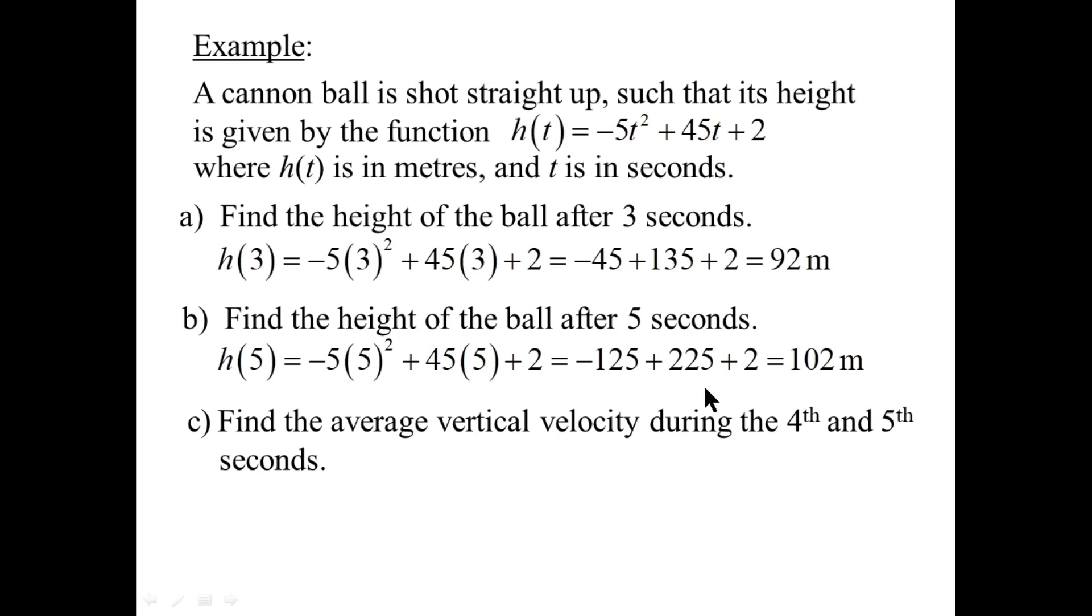Now, the average velocity during the 4th and 5th seconds will be, well, t1 will be the beginning of the 4th second. So that would be h of 3. And t2 would be the end of the 5th second, which would be h of 5. After 5 seconds has passed. So these were set up so that we can answer question c. Average velocity is h minus h over t minus t. So it's h of 5 minus h of 3 over 5 minus 3. Notice this pattern. 5 here, 3 here. 5 here, 3 there. And we can look above to get h of 5. It's right here, 102. And look above to get h of 3. It's 92 right there.